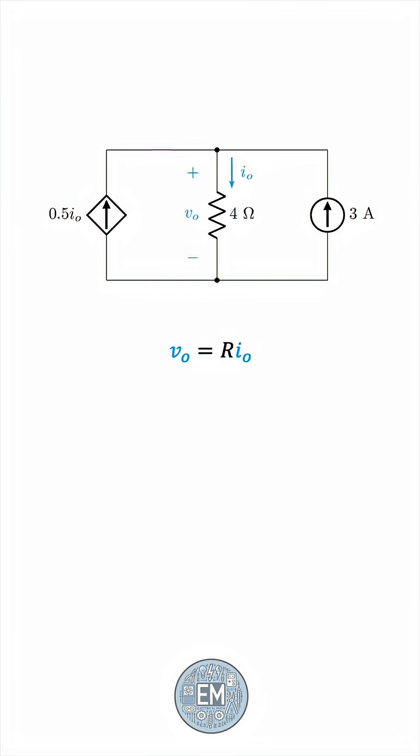To get a second equation, we'll look at this node at the top, call it A, and apply KCL at this node.